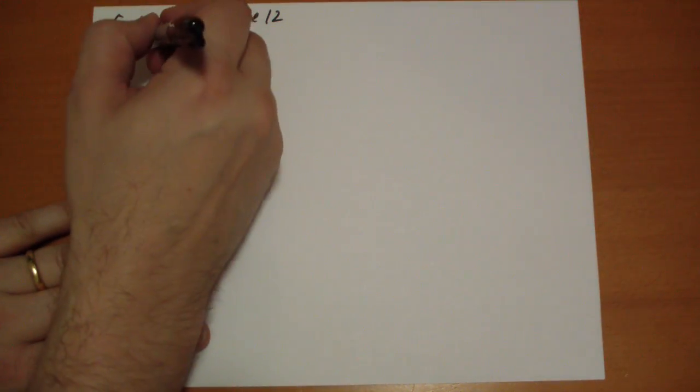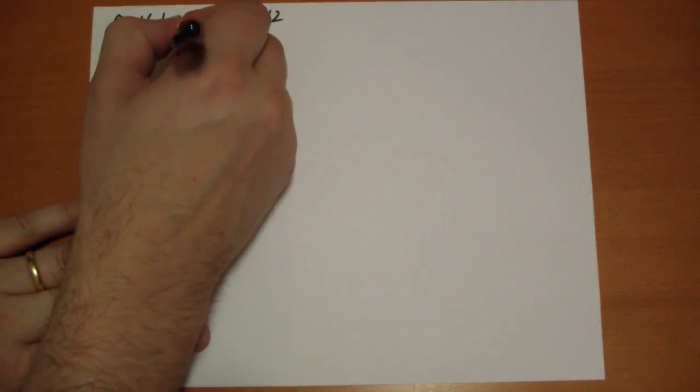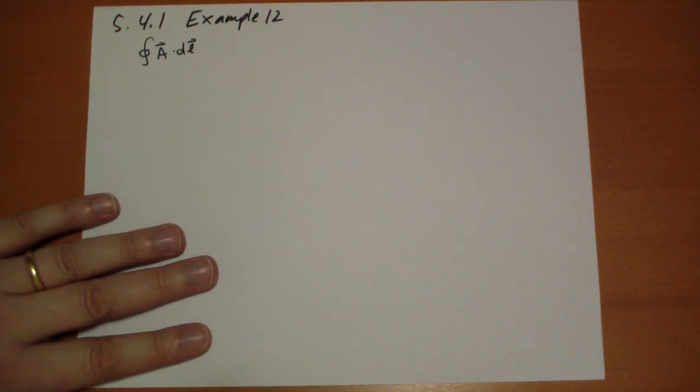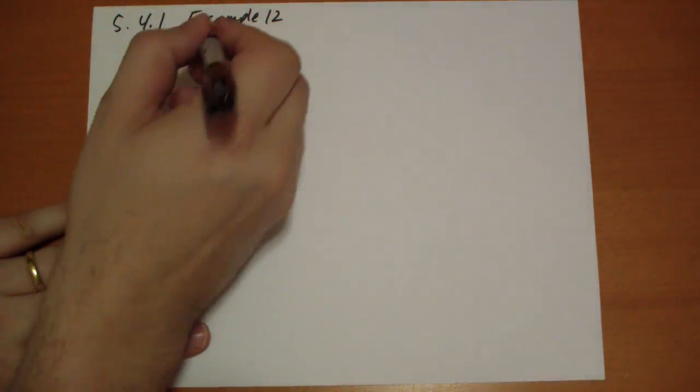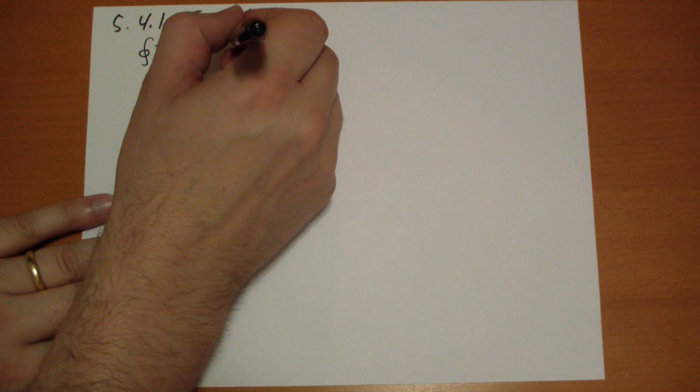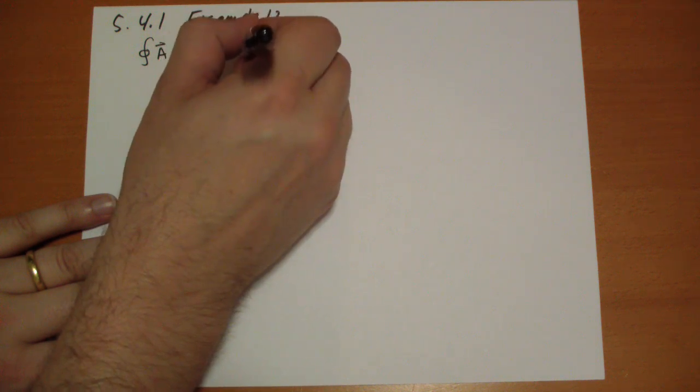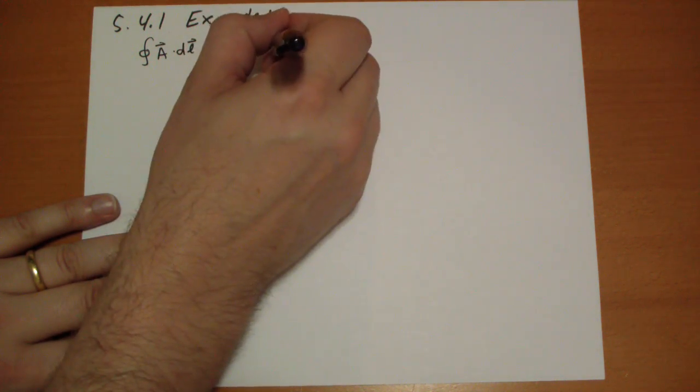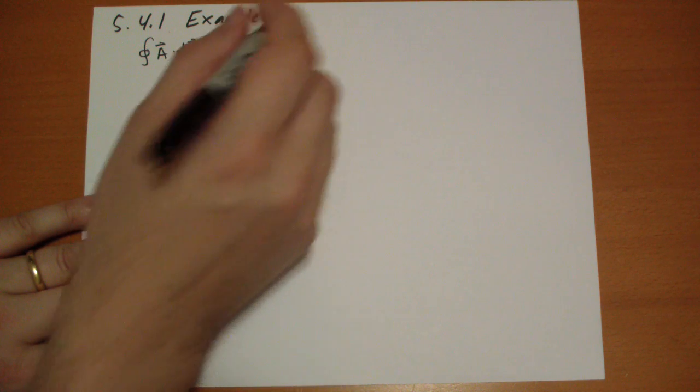So here's the cute method. He calls this cute. So we're going to take the A vector and go around some loop. Doesn't matter what. And we're going to notice that using Stokes' Theorem that's the same as the curl of A dotted with the dA vector. Okay. This is Stokes.